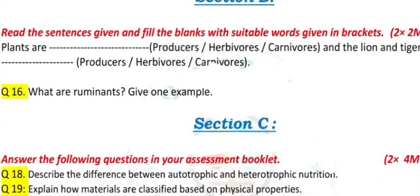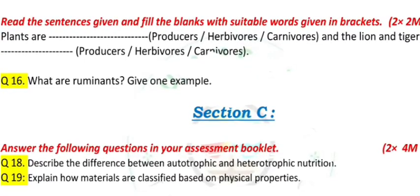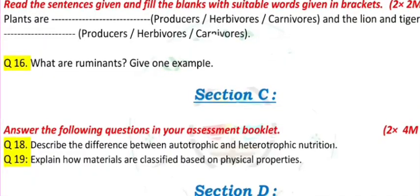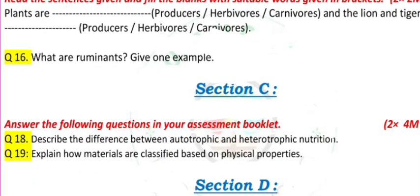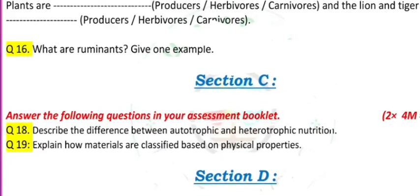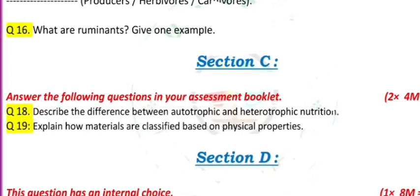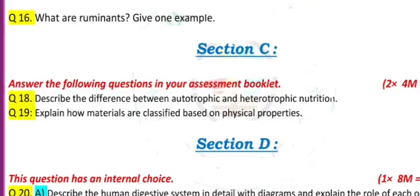Section B: Read the sentences given and fill in the blanks with suitable words given in brackets. 2 × 2 marks equals 4 marks. Plants are dash - producers, herbivores, or carnivores. And the lion and tiger are dash - producers, herbivores, or carnivores. Question 16: What are ruminants? Give one example.